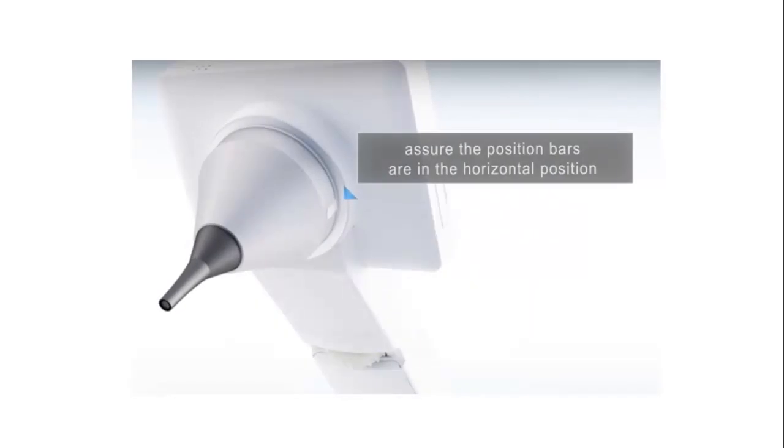Rotate the lens attachment gently in the clockwise direction to fasten the lens until it stops. Ensure the position bars are in the appropriate horizontal position.